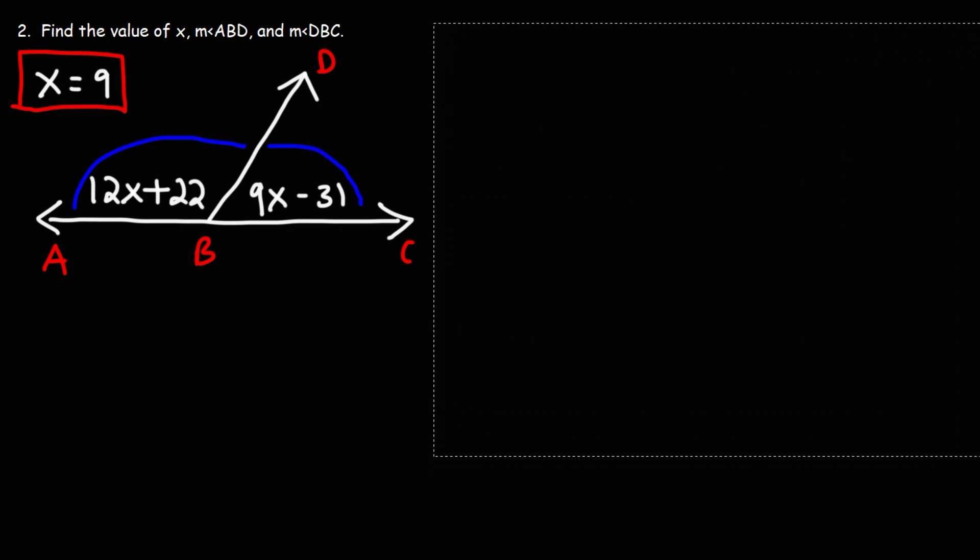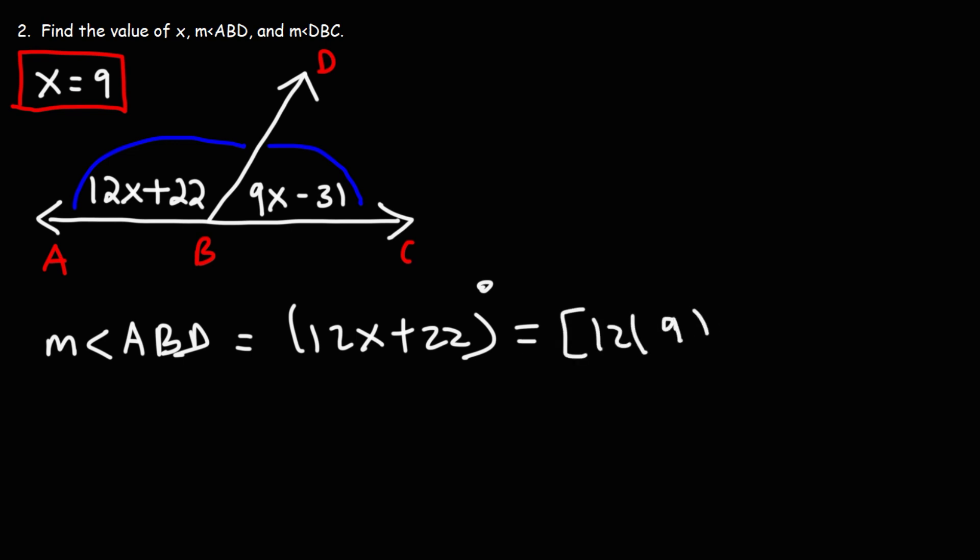Just like the last problem, once we know the value of X, we can calculate the angle measures. So let's start with the measure of angle ABD. So it's going to be 12X plus 22. Now let's plug in X. Let's replace X with 9.